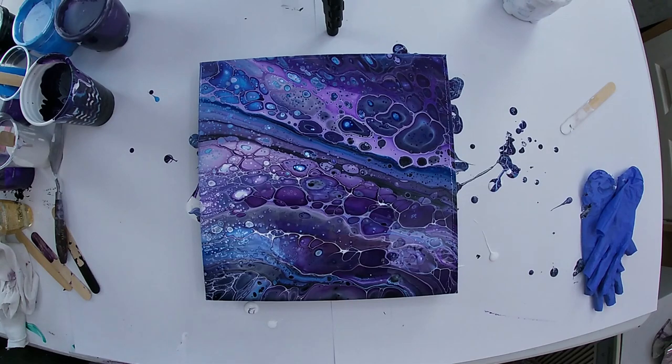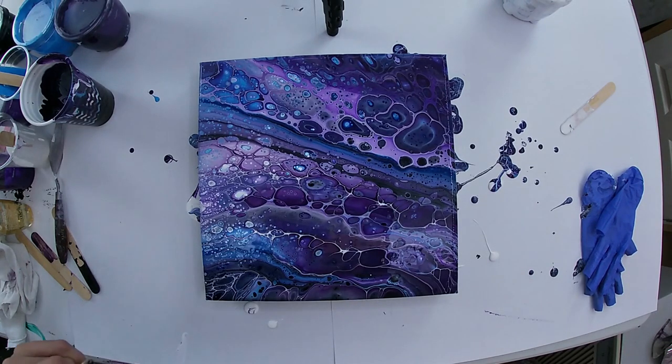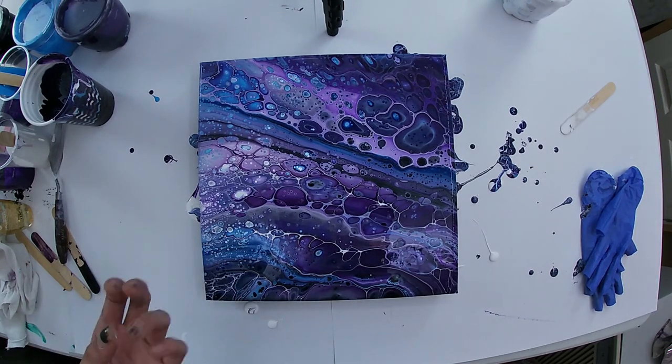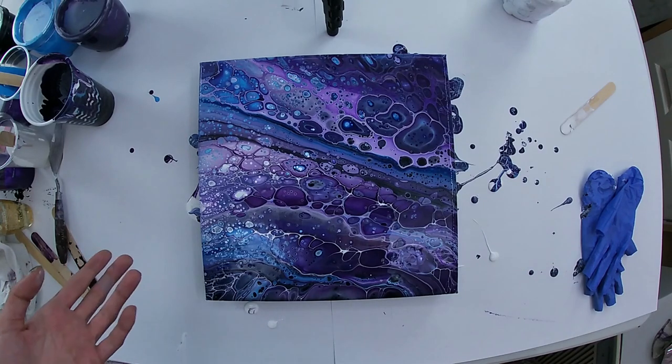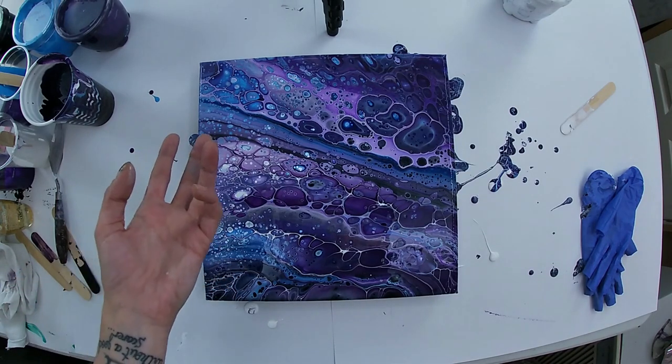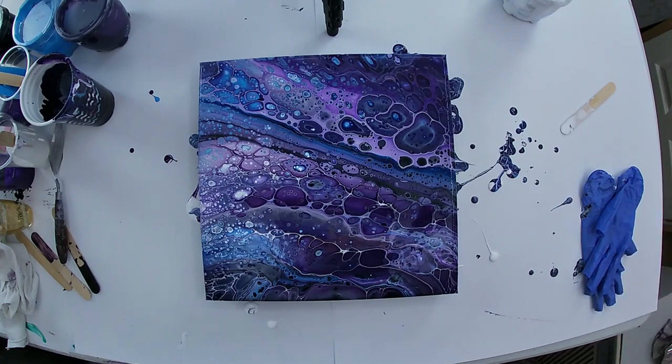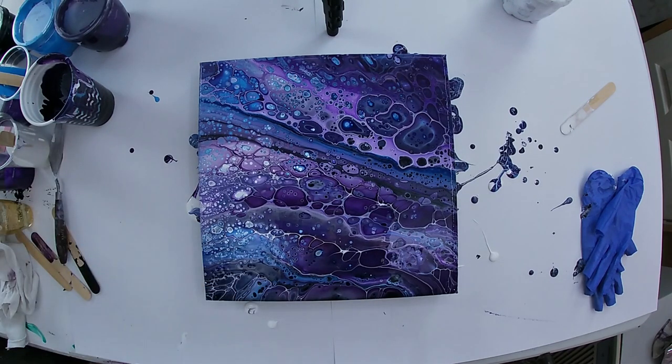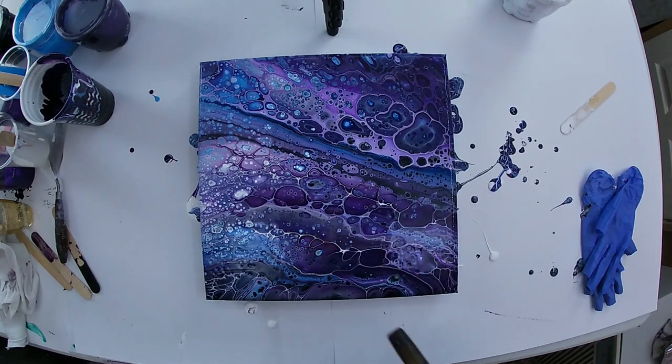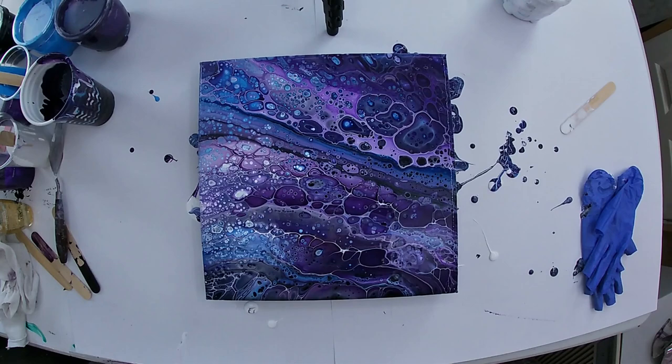So the reason I torch it is not only for the silicone to rise to the surface, because the heating of the oil will cause it to rise to the surface because acrylic paint is water-based. It also helps pop any air bubbles that may have been trapped in the paint when I rolled it over.